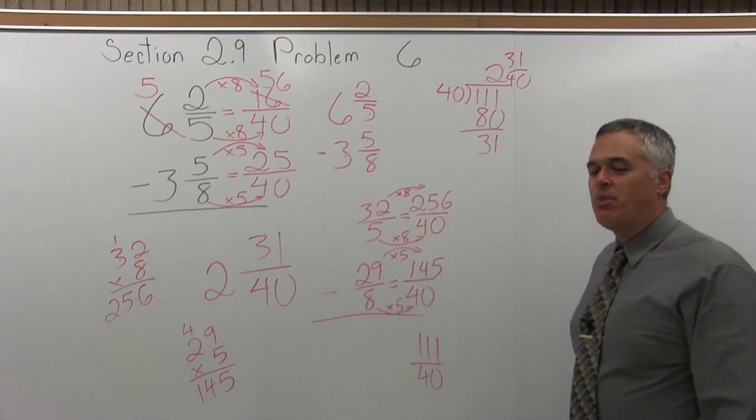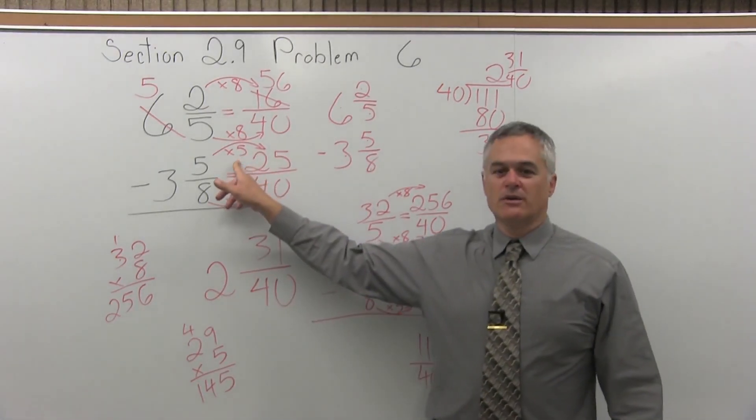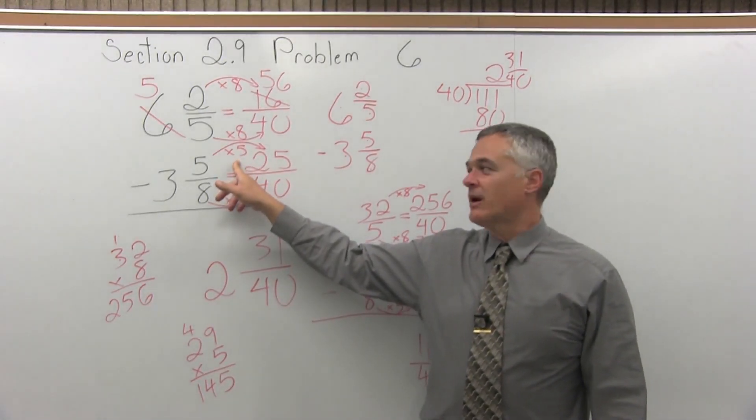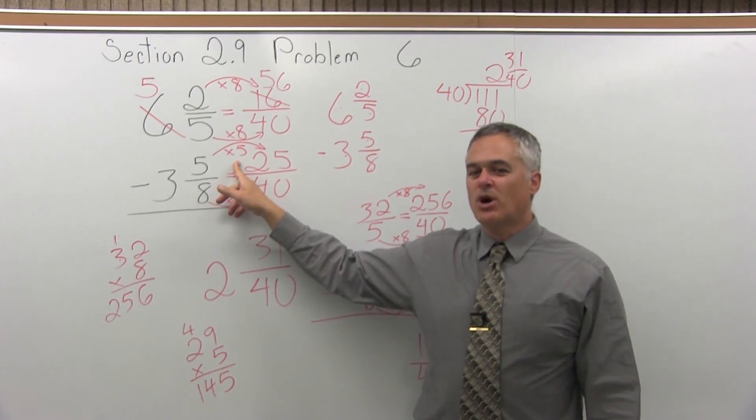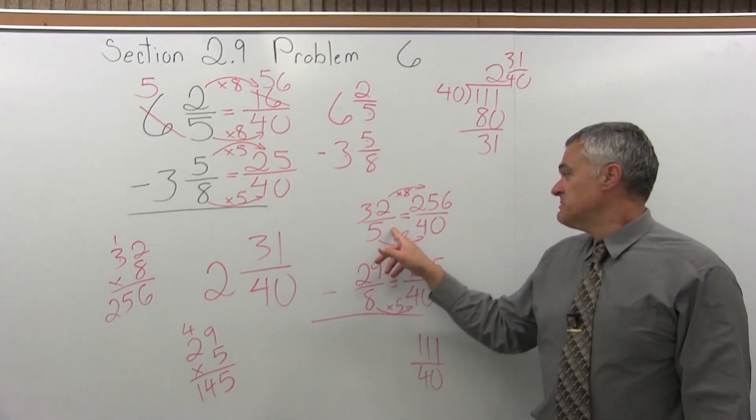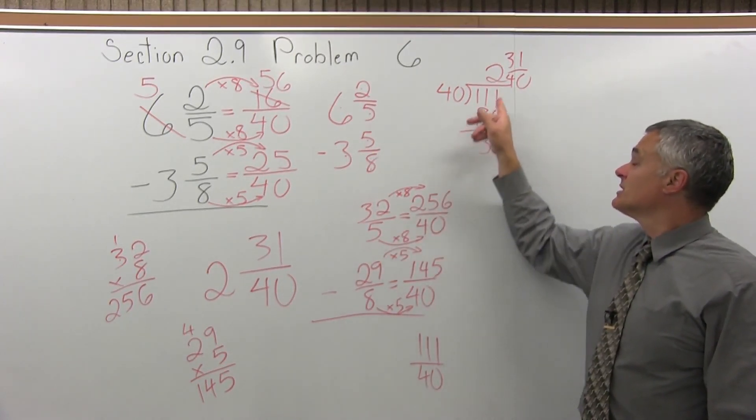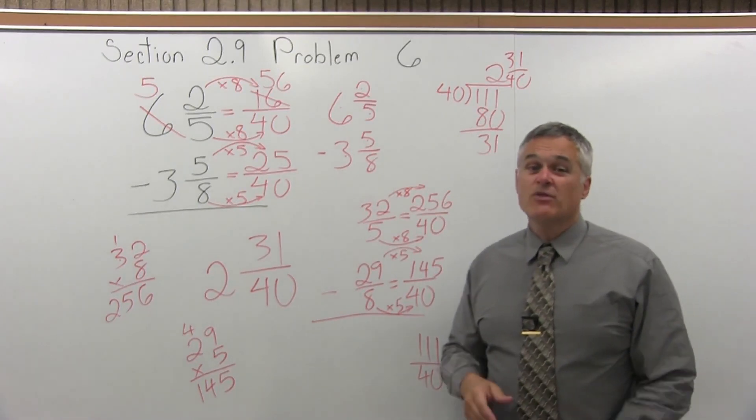Same answer, and we got it without borrowing. So if you're good at borrowing, it will go a little quicker. I got this answer quicker. If you hate to borrow or you're not sure if you remember, make them both improper fractions. Just do big numerators and convert it to a mixed number when you're done, and you don't have to remember how to borrow.